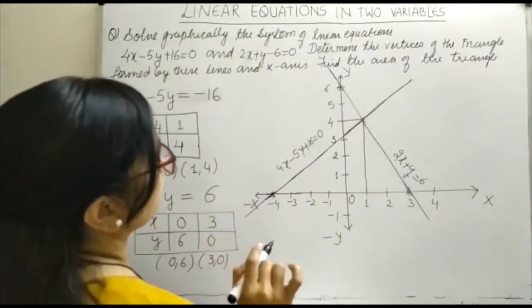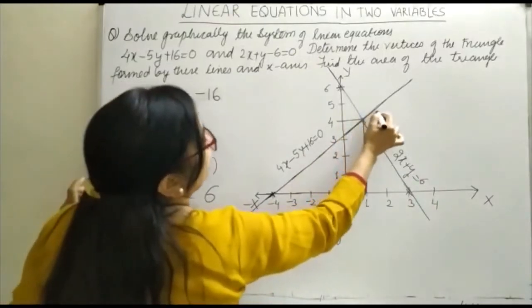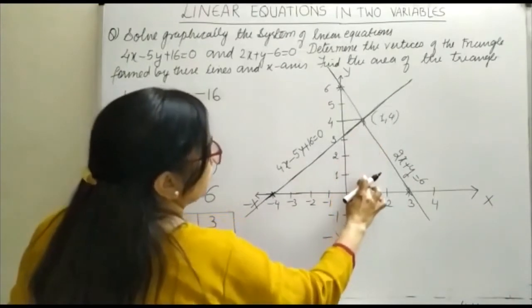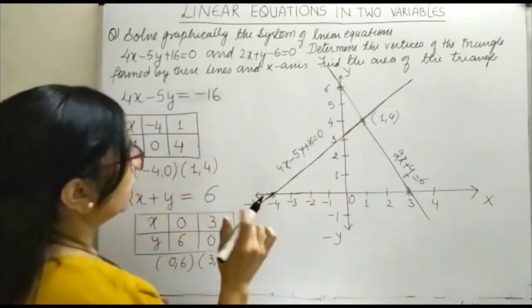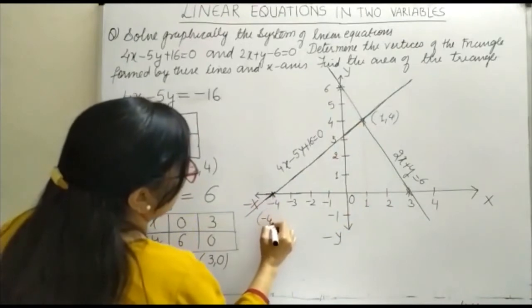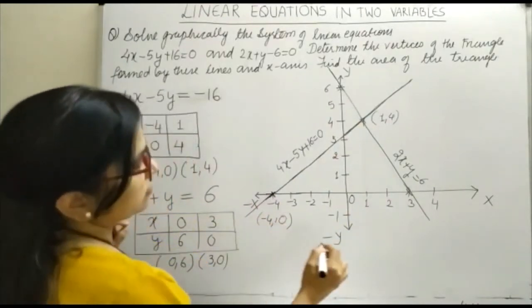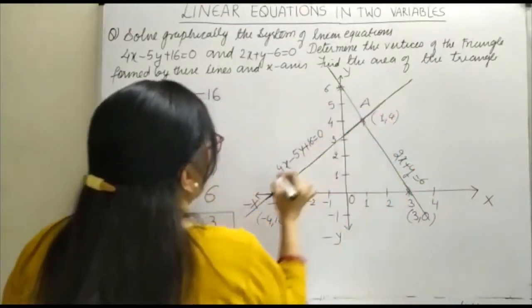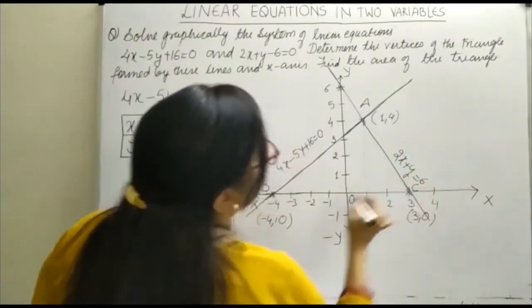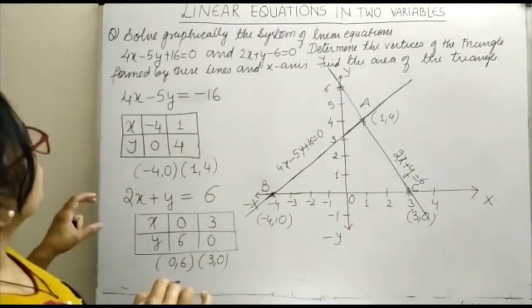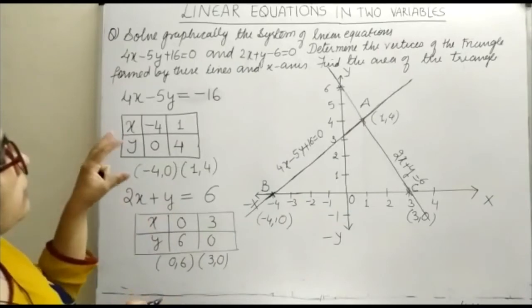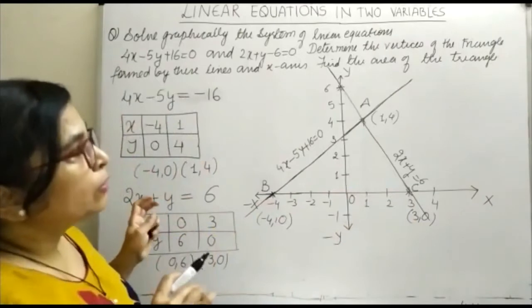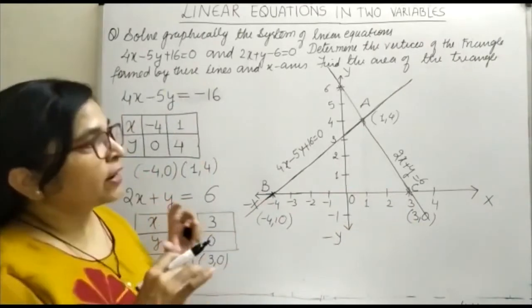Now what is asked? Determine the vertices of the triangle. This vertex is 1, 4. This one is minus 4, 0, and this is 3, 0. You can label them: this is A, this is B, and this is C. The vertices of the triangle are formed by these lines and the x-axis. Moreover, we need to find the area of the triangle.